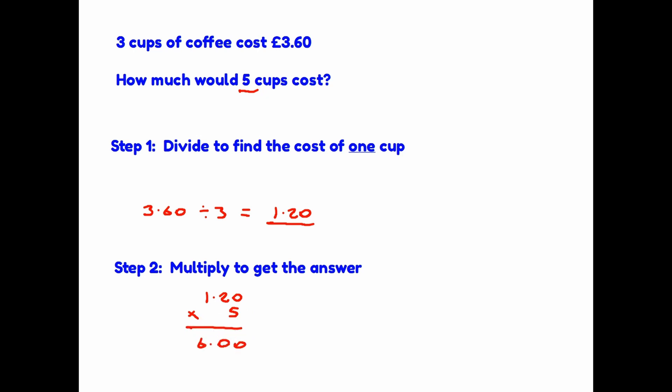So, whatever the question is, you are given a price of a certain number of items. Divide by that number, and you'll find the price of one item. Once you have the price of one item, you can multiply to find the price for the number of items you've been asked.